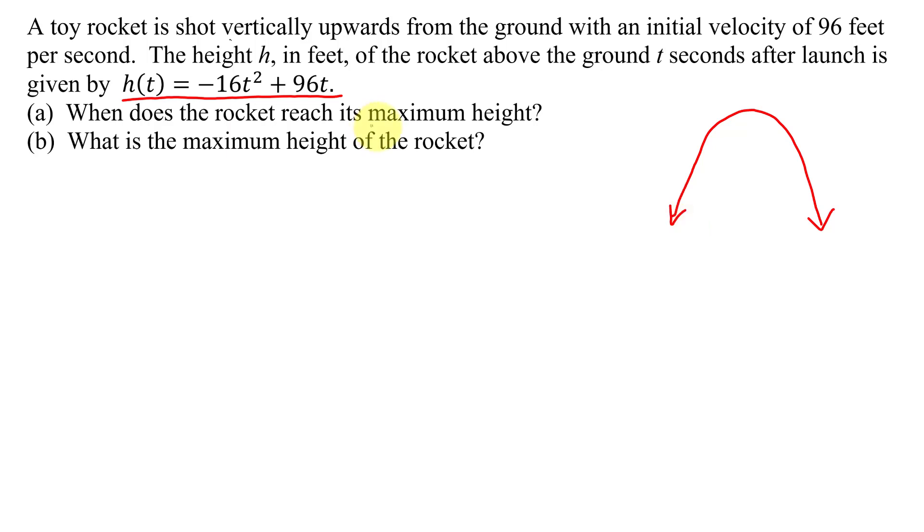And what are we trying to find? We're trying to find information about the maximum height of the rocket. Well, where does that occur on this graph? This is where we get the maximum height of the rocket. And what is the name of this point on a parabola? This is called the vertex.